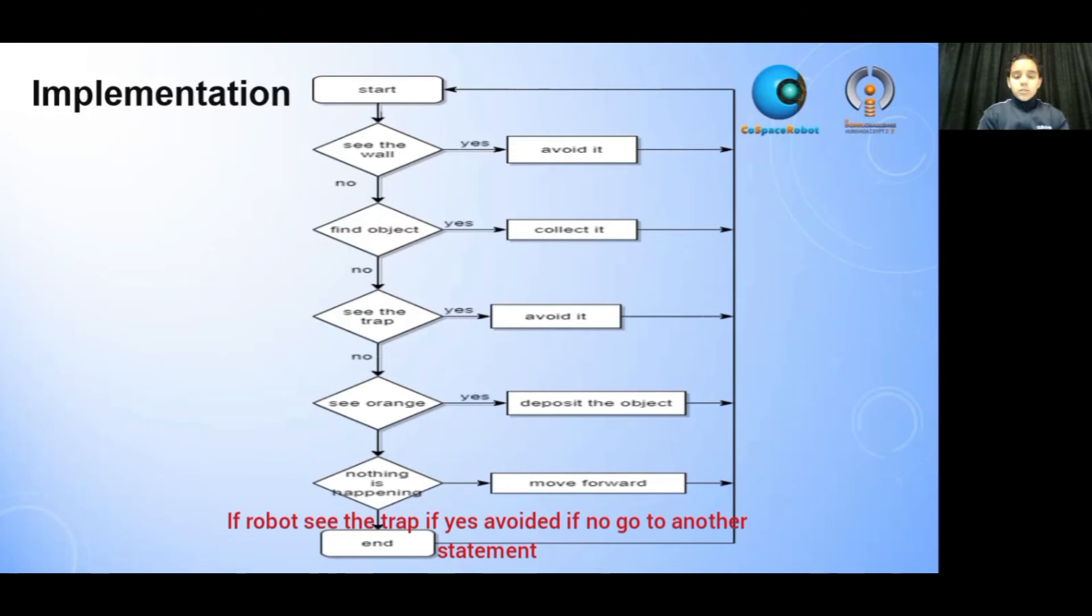Does the robot see the trap? Yes, avoid it. No, go to the other statement. Does the robot see the deposit? Yes, deposit the object. No, go to the other statement. If there are no conditions, we move forward and then it keeps repeating.